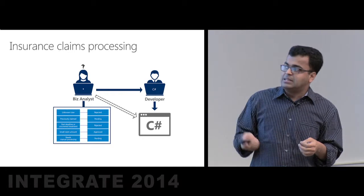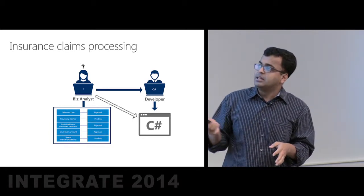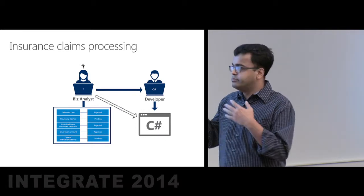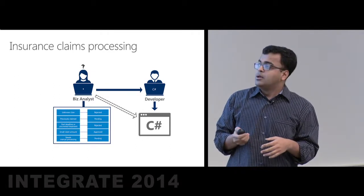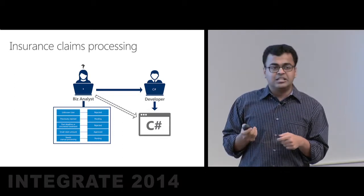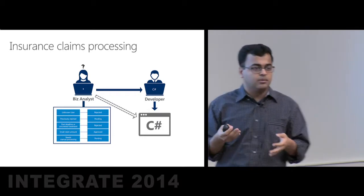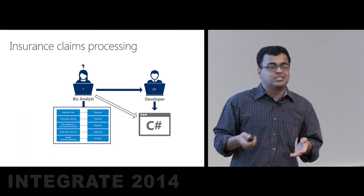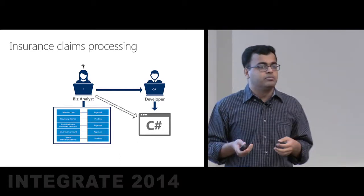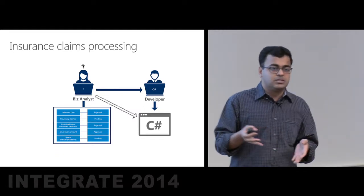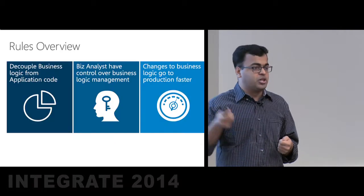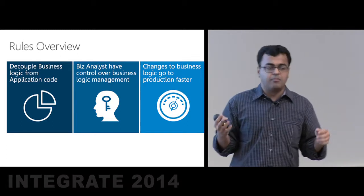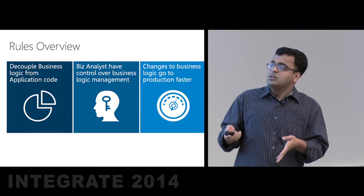The business analyst comes up with the business logic and passes it to the developer, who codes it into the application. However, if the business analyst needs to review what's been implemented or wants to change the business logic, the code may not be understandable by them. Additionally, if you wanted to change the business logic, you don't want to go through a full software cycle to get it into production — business logic changes quite often based on regulatory requirements, company policies, and many other factors.